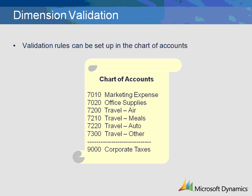For example, let's say our departments are set up as Sales, Admin, and HR. The Marketing Expense account should only be used by the Sales department — we can restrict the account to only allow the Sales department to be used. We can also take it a step further and default the department dimension to Sales, so that every time this account is used in Microsoft Dynamics AX, the department dimension will be automatically populated.